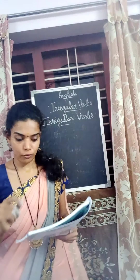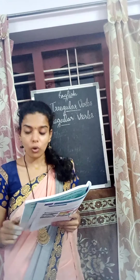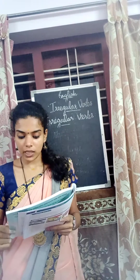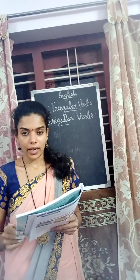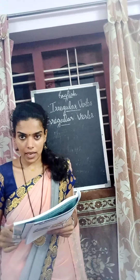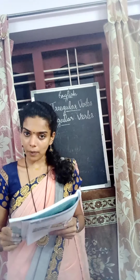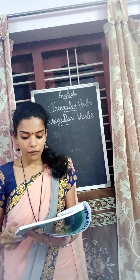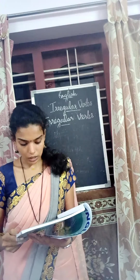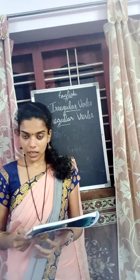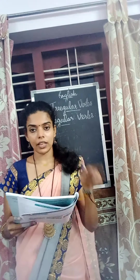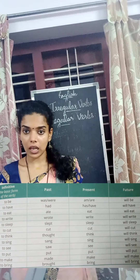Irregular verbs. For regular verbs, we follow fixed rules when changing their tenses — for example, we add 'ed', 'd', or 'ies' to regular verbs in the past tense. However, there are some verbs called irregular verbs which do not follow fixed rules. The entire verb changes when the tense is changed. Given below is a list of some irregular verbs.